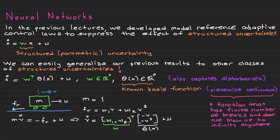Welcome back. I would like to talk about neural networks, but before I dive into neural networks, I need to show you several things that will also be needed. Let me begin with the adaptive control formulation. In the previous lectures, we developed model reference adaptive control laws to suppress the effect of structured uncertainties. I will first explain what I mean by structured uncertainties, and then I will talk about unstructured uncertainties, where we will need neural networks.